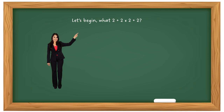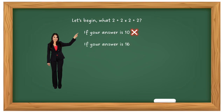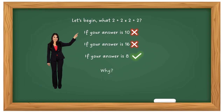How did you get on? Well let me show you. If your answer was 10 then you were wrong. If your answer was 16 you're also wrong. But if your answer was 8 then you were correct. So why is that? Well, that's something called BODMAS.